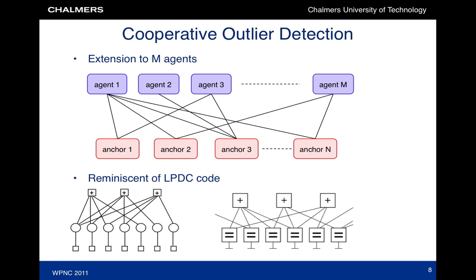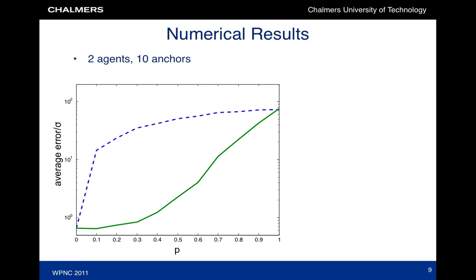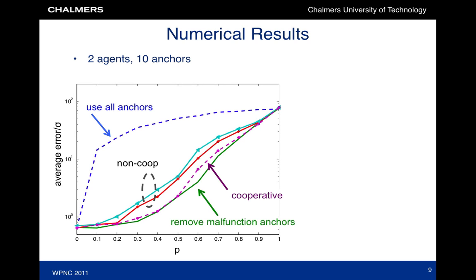These EXIT charts are not covered in this presentation. In this figure, we show the performance of our new algorithms for a scenario with two agents and ten anchors. The two reference curves are the ones we've seen before. By applying our algorithms without cooperation, we have good performance for p up to 20%. If we then apply cooperation, for virtually every value of p, we achieve near-optimal performance.